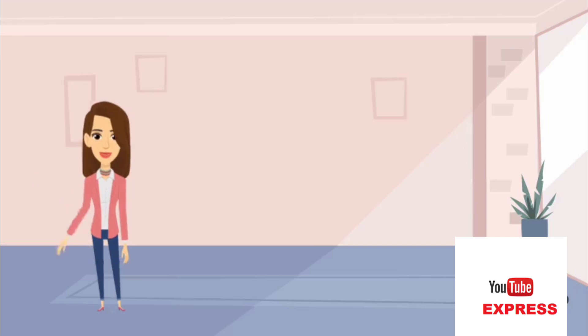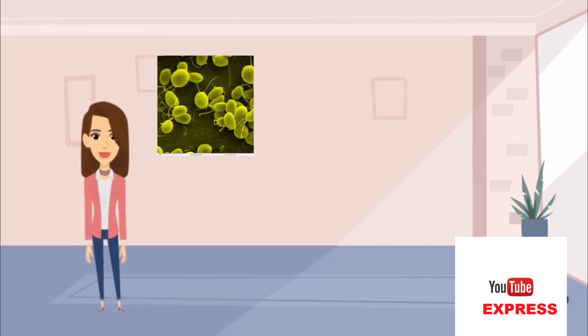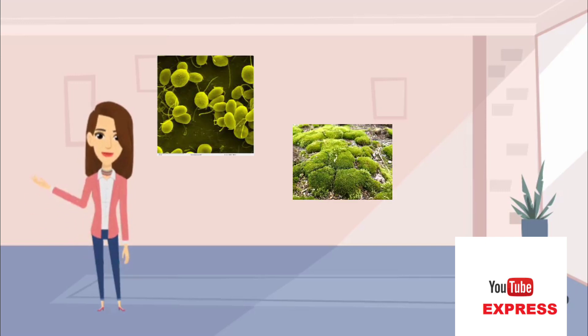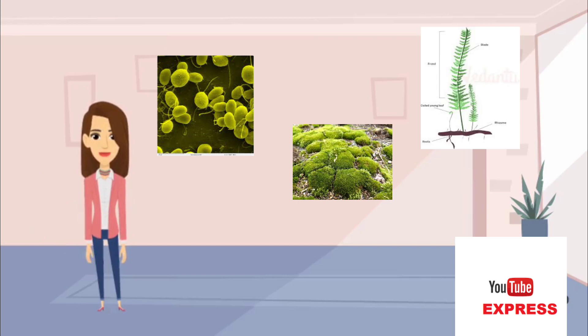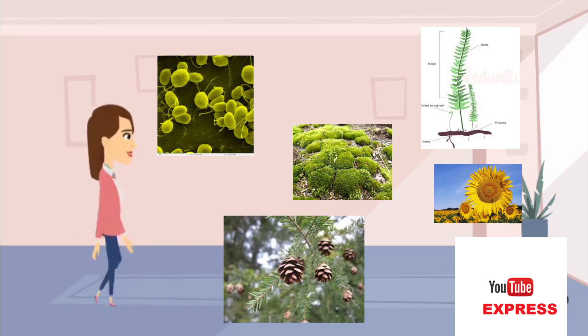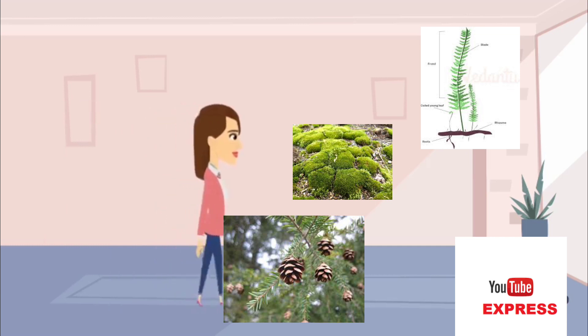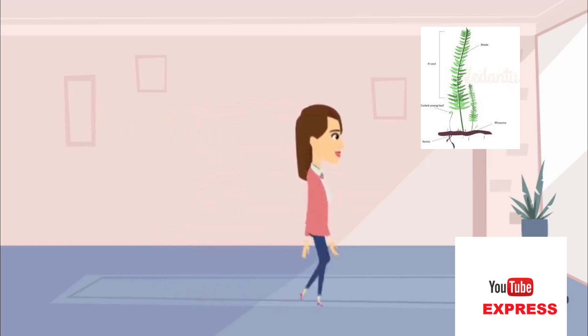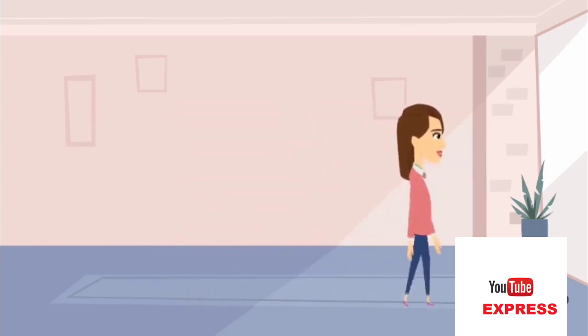In this chapter we are going to learn about algae, bryophytes, pteridophytes, gymnosperms and angiosperms. Let us first learn about algae.